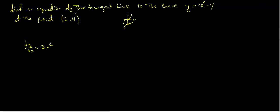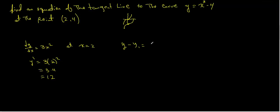If we evaluate the derivative at x equals 2, y prime equals 3 times 2 squared, which is 3 times 4, or just 12. The tangent line is a linear equation, and we use y minus y₁ equals m times x minus x₁ — this is called the point-slope formula. You use it when you're given a slope and a point.